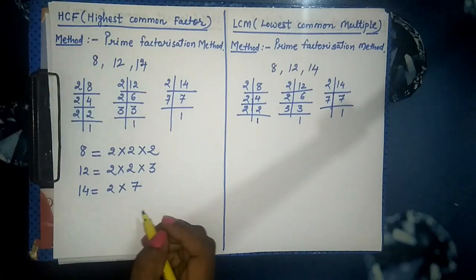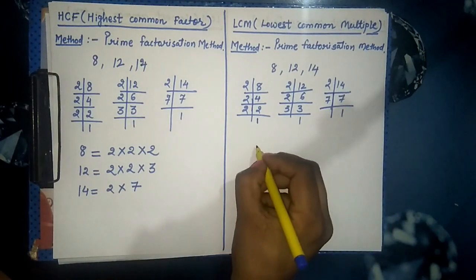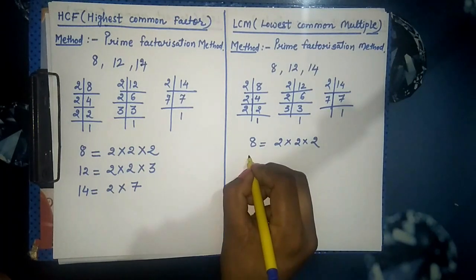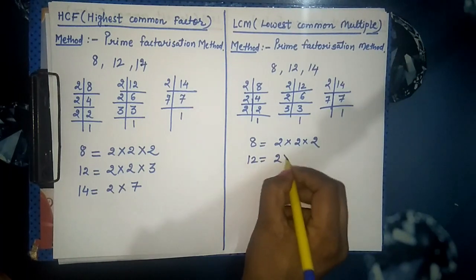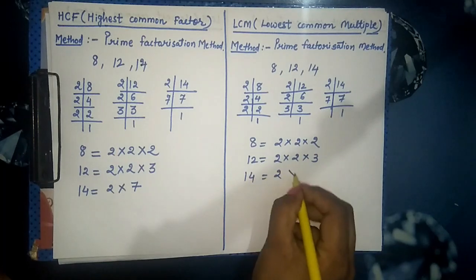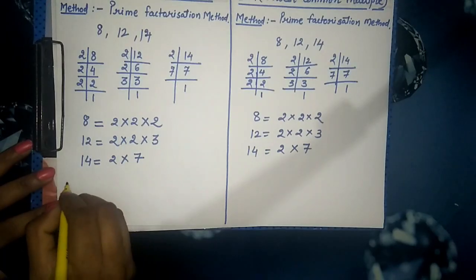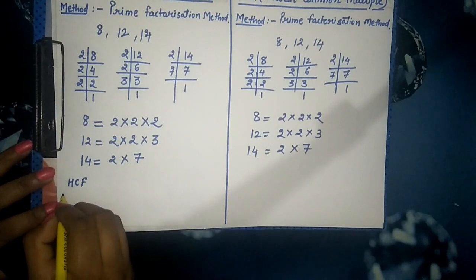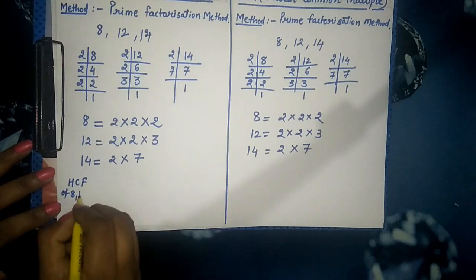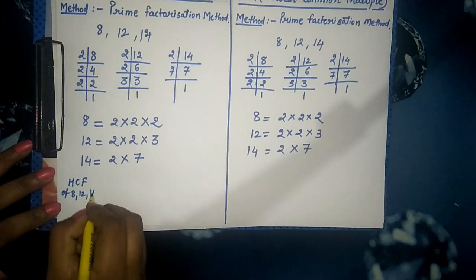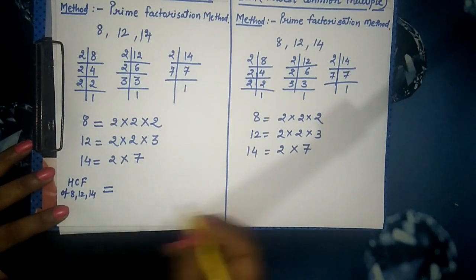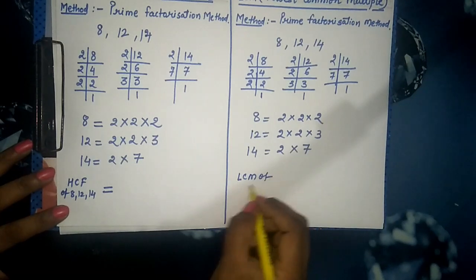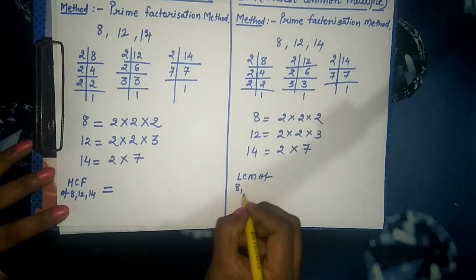We write the same multiplication form for LCM as well. Up to this point, the process for HCF and LCM is the same, but the next step is different for HCF and LCM. Now we can write down the HCF and LCM for 8, 12, and 14.